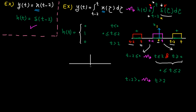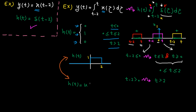Let's plot it. For t less than zero, it's zero. Between zero and two, it's one. For t greater than two, it's zero. This is H(T), which you can easily write as u(t) minus u(t minus 2).